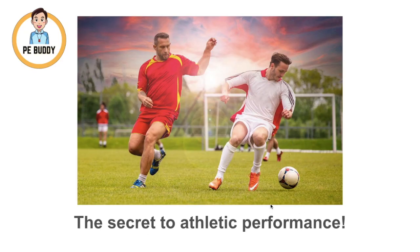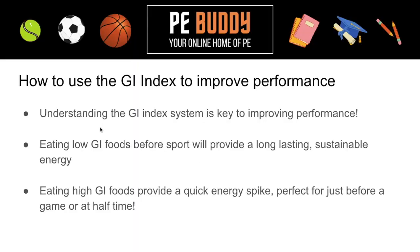The GI index is also the secret to athletic performance. Eating low GI foods before a sport will give us long-lasting, continual energy. And if we use high GI foods — which would usually be considered unhealthy — strategically, we can use that to provide a quick energy spike. This would be perfect for just before a game or even at half time.